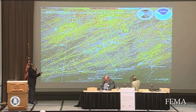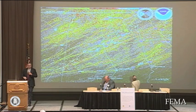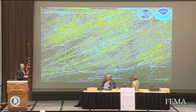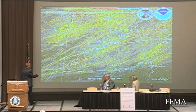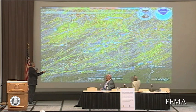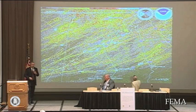Some of these long-track tornadoes — the ones that went through Marion, Franklin, and Lawrence counties — were on the ground for 135 miles. The storm that came through Tuscaloosa had an initial track of about 70 miles, then there was a break of about a couple miles around Fultondale north of Birmingham, and then it was on the ground for another 80 miles.